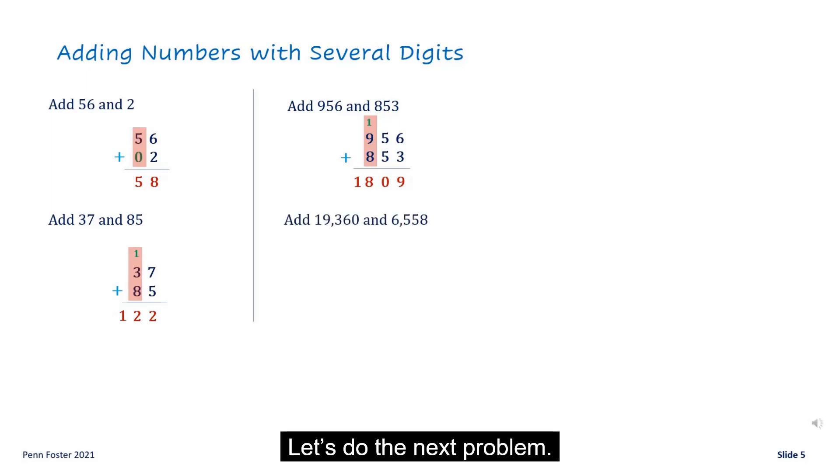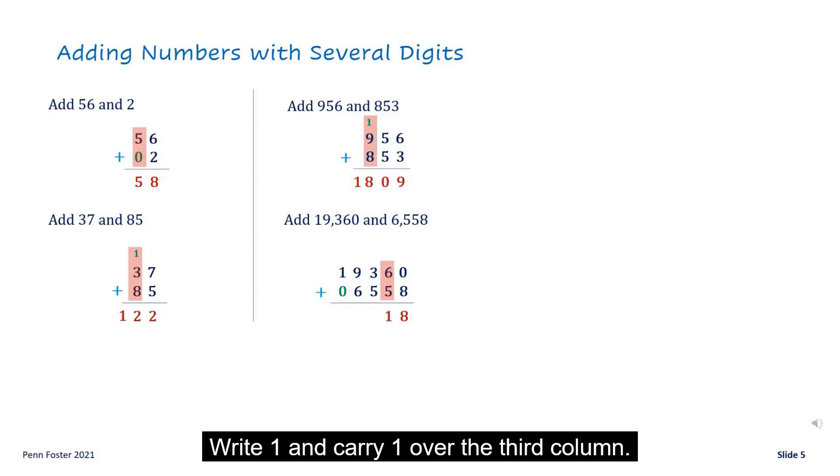Let's do the next problem. Add the first column. Zero and eight is eight. Six and five is eleven. Write one and carry one over the third column. Add one, three, and five. It's nine. Add nine and six. It's fifteen. Write five and carry one over the last column.